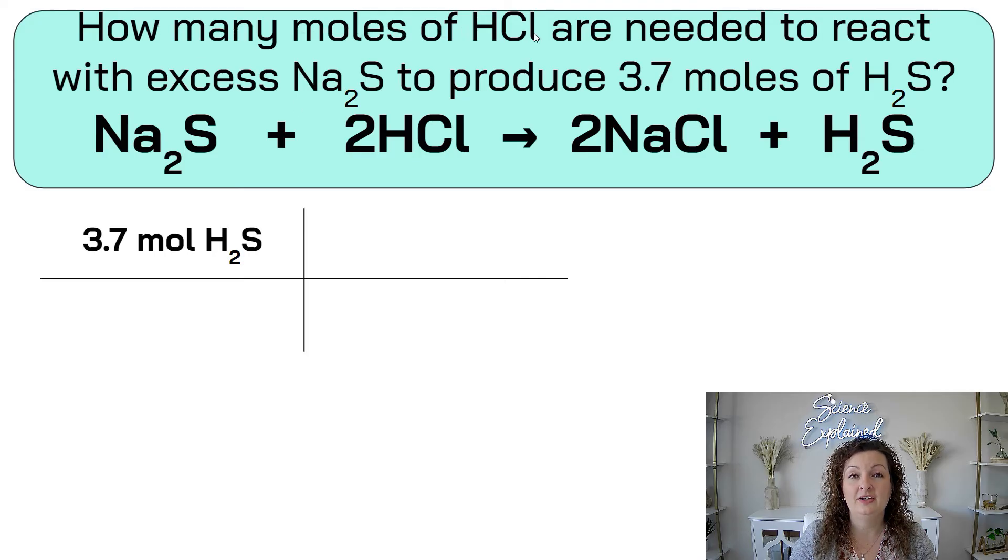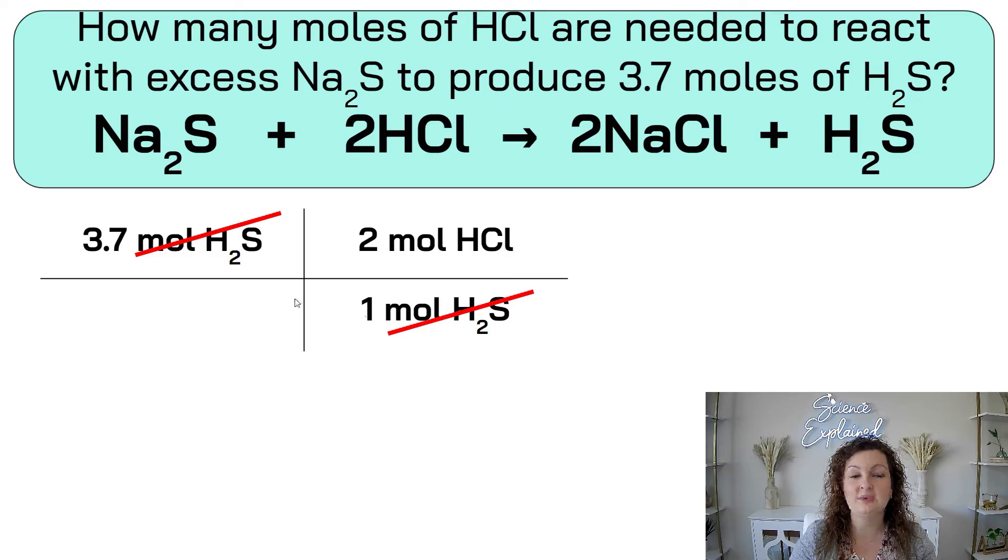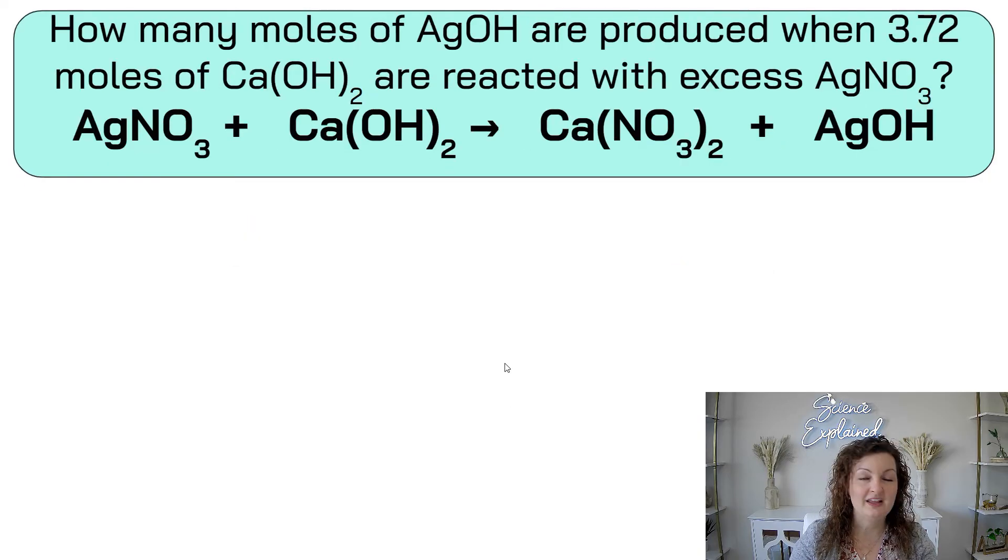And then what do we want to find? How many moles of HCl? So we look for HCl, and it is a 2. So put that 2 in front. Now we can cross out our units, perfect, and we can multiply the top. So 3.7 times 2 divided by the 1 gives us 7.4 moles of HCl. Last one, you guys. Try this one start to finish. Pause the video right after I get done reading it. How many moles of AgOH are produced when 5.72 moles of Ca(OH)2 are reacted with an excess of AgNO3? So go ahead and pause this and do it start to finish.